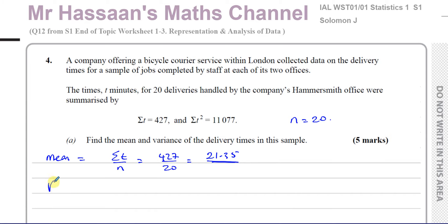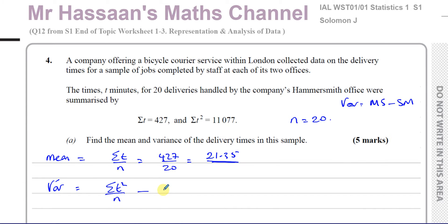And the variance. Now remember, the variance is given by the formula: the mean of the squares minus the square of the mean. That's the variance. The standard deviation is the square root of the variance; here they want the variance. So the mean of the squares is the sum of all the squares of the values divided by the number of entries, and you subtract from that the square of the mean, which is the sum of the entries divided by the number of entries, all squared.